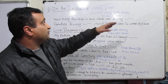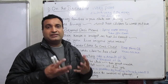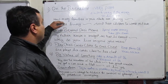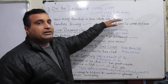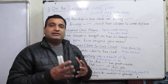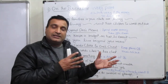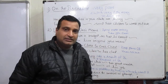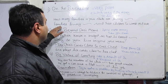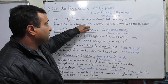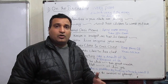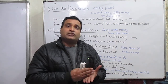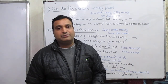'On the breadline' means very poor or with very little money to live on, where income sources are limited for the whole family. For example: 'How many families in your state are living on the breadline?' meaning how many families in your city or state are living below the poverty line with very low income. Also: 'Families living on the breadline send their children to work outside' — families with low income send their children out to earn.